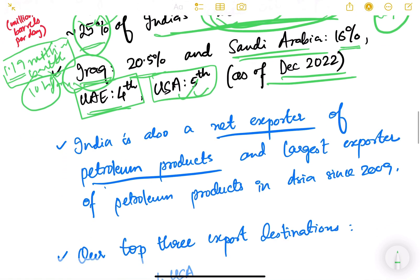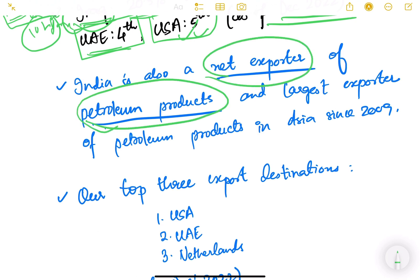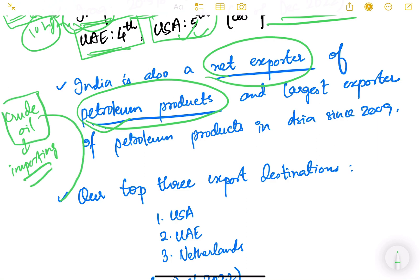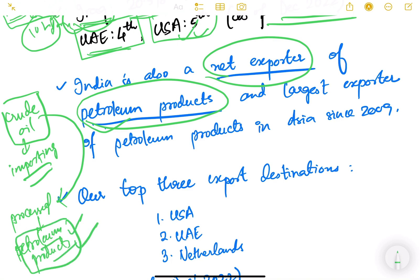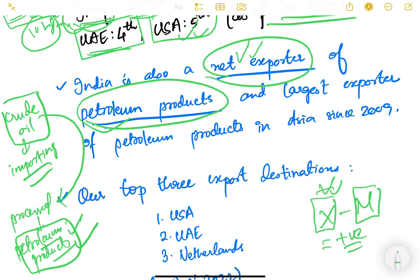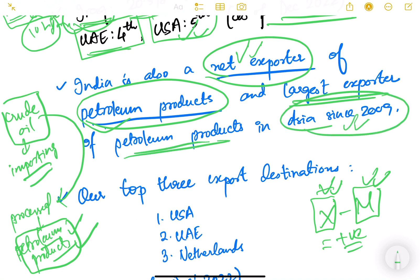India is also a net exporter of petroleum products. We are net importers of crude oil, but after crude oil is processed and refined, petroleum products such as gasoline, petrol, and diesel are formed, and we export these to other countries. Net exporter means the value of exports exceeds the value of imports. India is the largest exporter of petroleum products in Asia since 2009 — larger than China.